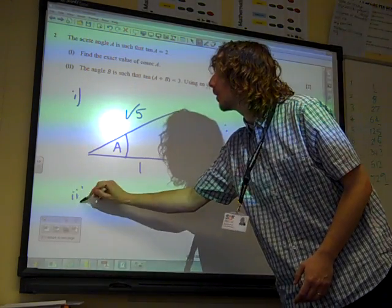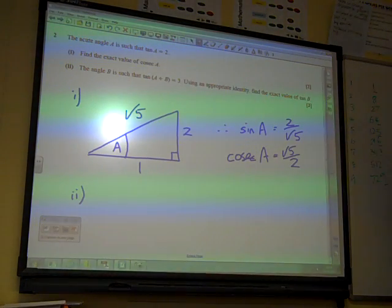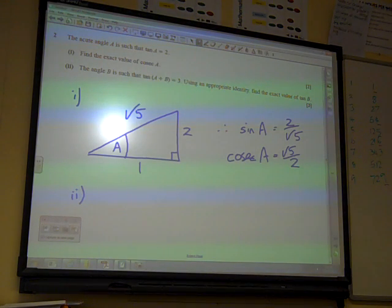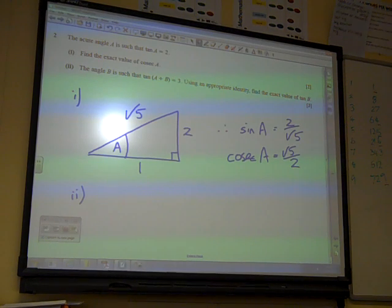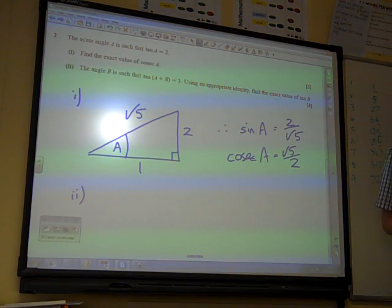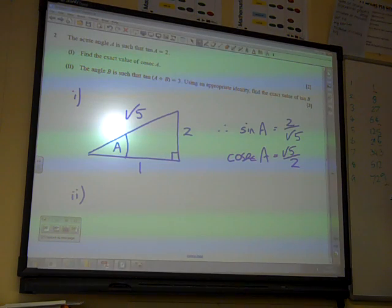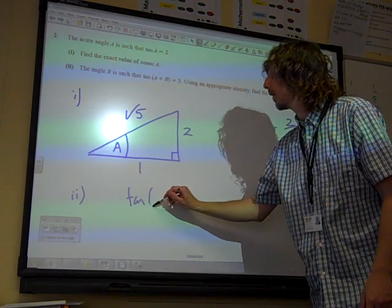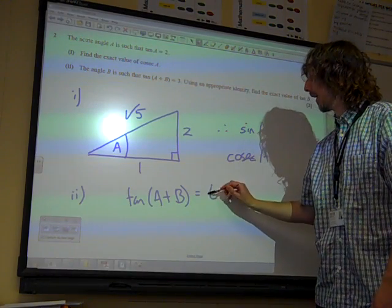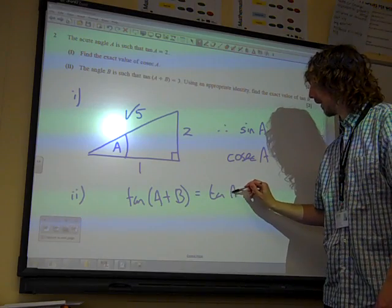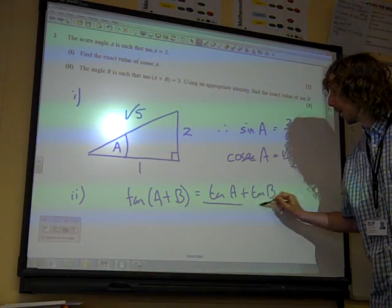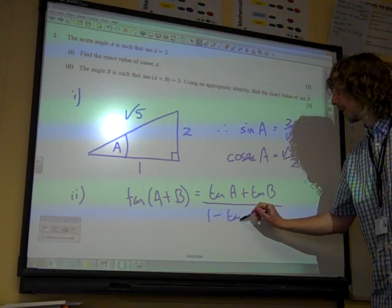Part 2. Right, hang on now. The angle B is such that tan(A + B) is equal to 3. Using an appropriate identity, so they want us to use the identity. So we've got the formula booklet, and this identity is in the formula booklet. Tan(A + B) is equal to tan A plus tan B divided by 1 minus tan A tan B.